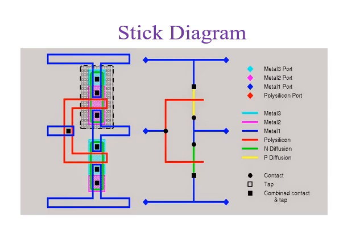The most important thing in this Stick Diagram is that the contact between the P-diffusion and the red polysilicon metal does not have a contact marker. If we were to place a contact between the P-diffusion or N-diffusion and the polysilicon, it would not act as a transistor — it would just act as a wire. That is why there is no black contact dot at the crossing of polysilicon and the diffusion regions.